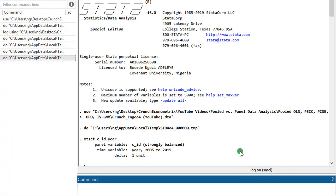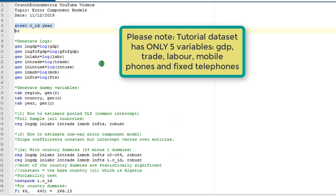I have a strongly balanced panel. Let us proceed. Because I've been using the log form of these variables, I have generated all the logs here with this code. And these are the codes I used to generate the dummies I showed you in the data editor.